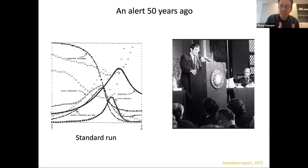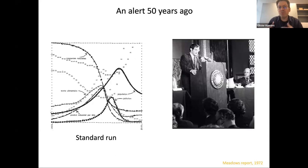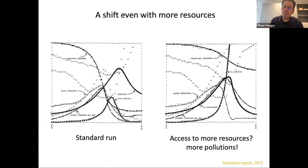We knew that infinite growth on a finite planet can't go on forever, so we knew there would be a tipping point at some point. But the surprise is that it's much more short-term than expected — the prediction is that it would be in the first half of the 21st century. The book sold millions of copies and was translated into 35 languages. It had a massive impact on society.